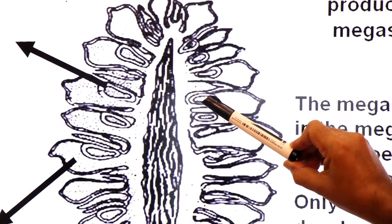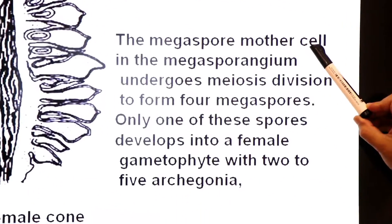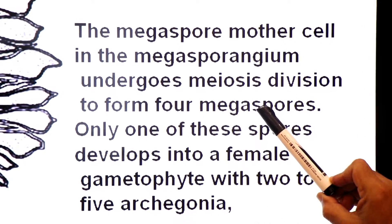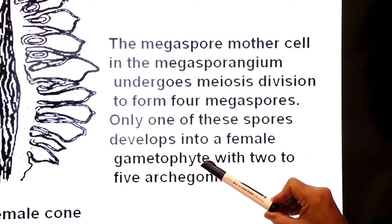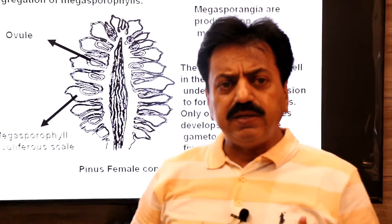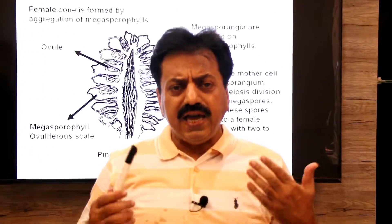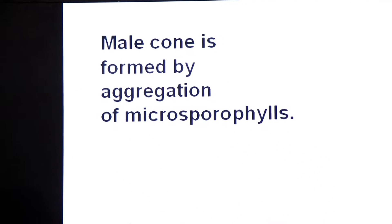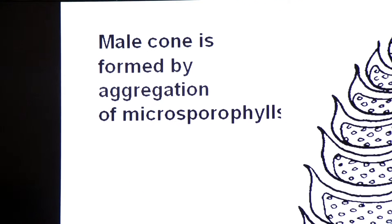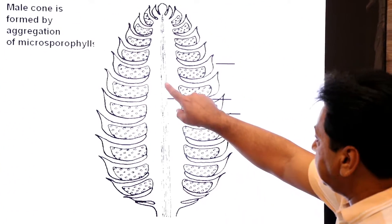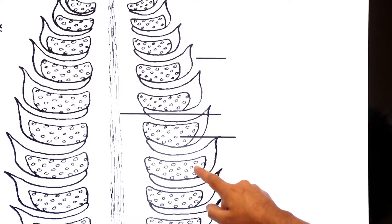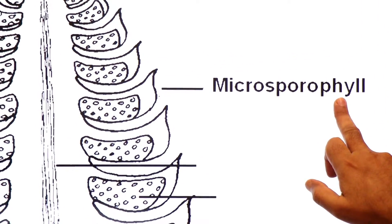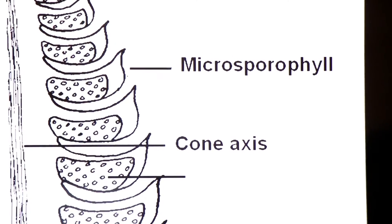Megasporangium (ovule/nucellus) — the megaspore mother cell in megasporangium undergoes meiosis to form 4 megaspores. Three degenerate, only one functional megaspore remains. Only one of these spores develops into the female gametophyte with 2 to 5 archegonia. Teen megaspores degenerate ho jate hain taki jo ek functional rahe us se healthy female gametophyte generate ho. Male cone is formed by aggregation of microsporophylls. This is the male cone of pinus — it has a central axis and these are microsporophylls. In ke axle mein microsporangia nazar ate hain — a modified leaf containing microsporangia, with the cone axis at center.